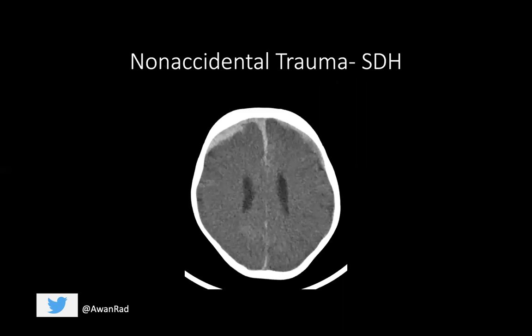Child abuse is the topic we're going to talk about today. It's a very high yield topic on the USMLE — I'd be shocked if you don't receive at least one question on non-accidental trauma on every step: Step 1, Step 2, and Step 3. Most patients are infants when they present, and it'll almost never present in anyone older than six years old. What you're looking for is a discordance between the history provided by the parent and the injuries seen on imaging studies.